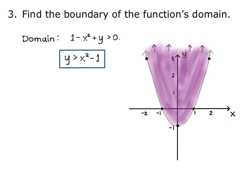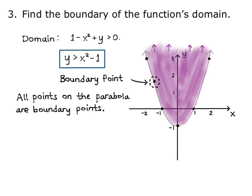Let's look at a point on the parabola y equals x squared minus 1. If I draw a small disk around that point, the disk contains points both inside and outside of the shaded region. So that point on the parabola is a boundary point. In fact, all points on the parabola are boundary points.